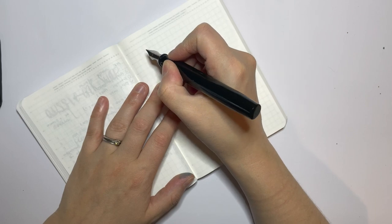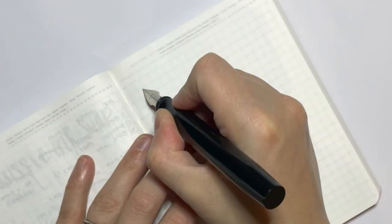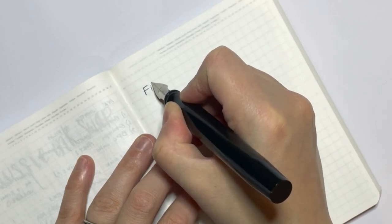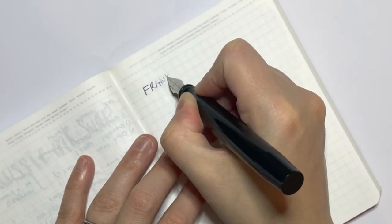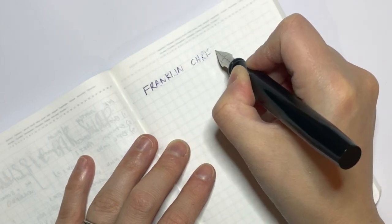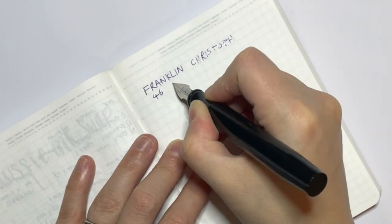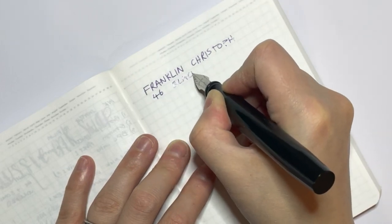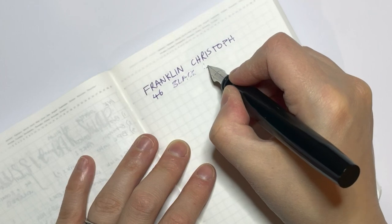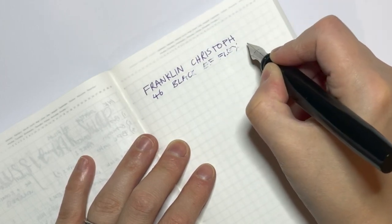So this is what I'm going to do first—I'm going to write no pressure, so just normal. This is the Franklin-Christoph Model 46, and it has an extra fine flex nib.